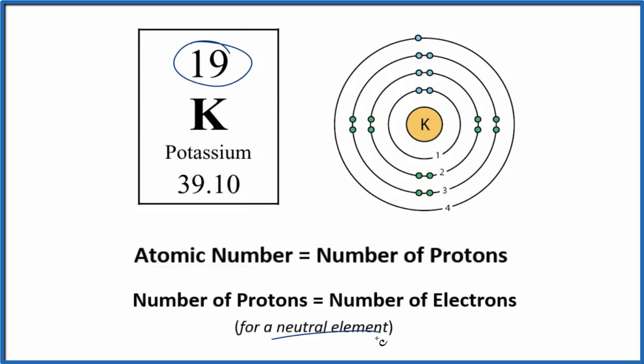For a neutral element, and all of the elements on the periodic table, they're listed as neutral. The number of protons equals the number of electrons. So we have 19 protons in the nucleus, and then spread out in these energy levels of the potassium atom, we have 19 electrons.